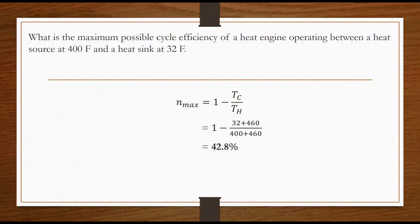We have η_max is equal to 1 minus T_c, which is the temperature of the cold end of the cycle, divided by T_h, which is the temperature of the hot end cycle.